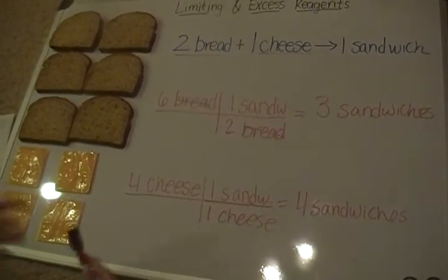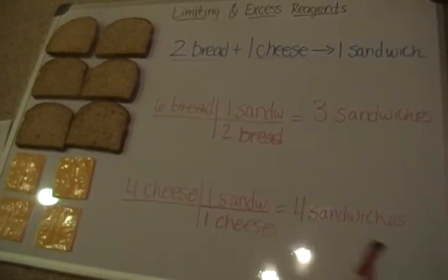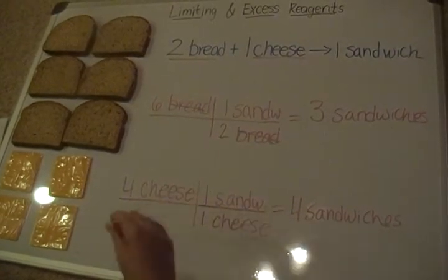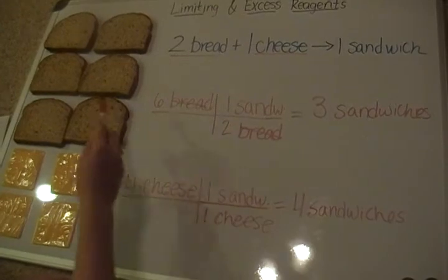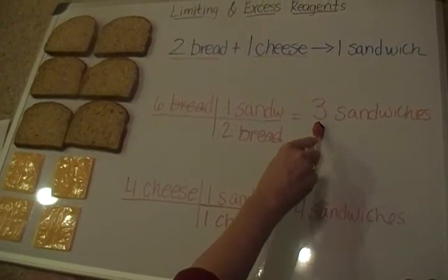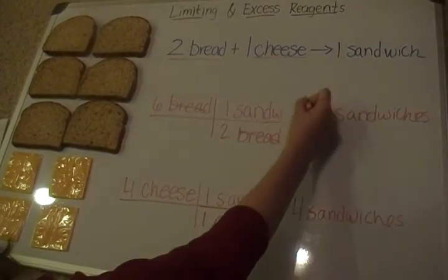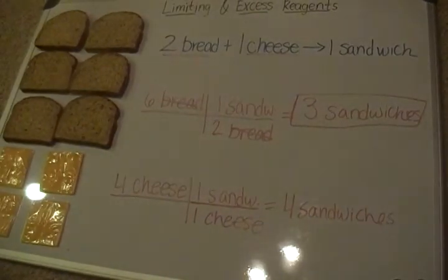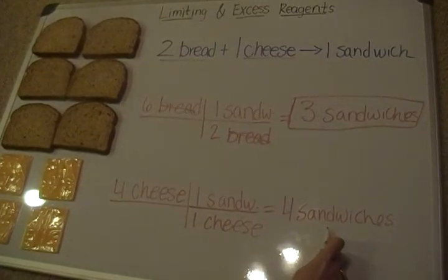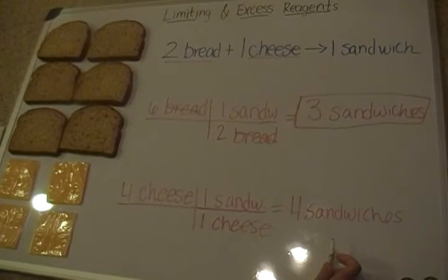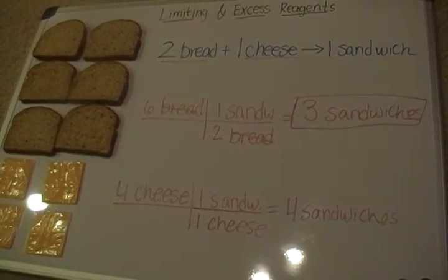Now we have to figure out what our maximum product is — how many sandwiches we can make. You might want to say the most we can make is four sandwiches because it's the bigger number. But you have to ask yourself: do I have enough bread for this? We had six pieces of bread, and six pieces was only able to make us three sandwiches, which means we can't make four sandwiches because we don't have enough bread. So the maximum amount I'm able to make with the reactants I have is three sandwiches. That's my maximum product, and that also tells me my limiting reagent — bread is my limiting reactant because I run out of it.